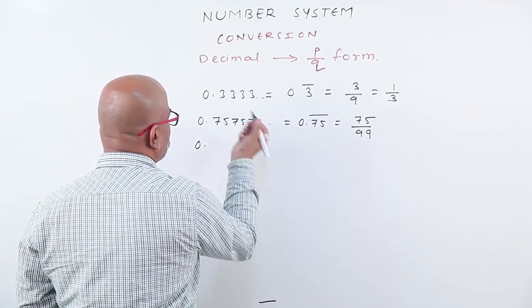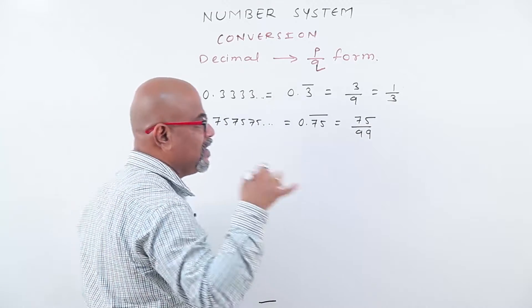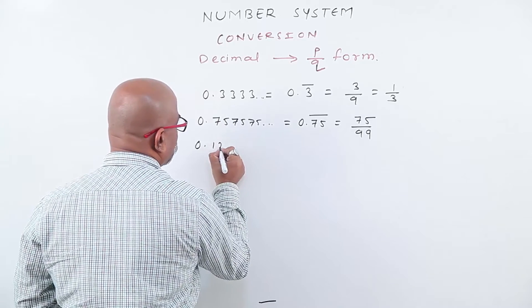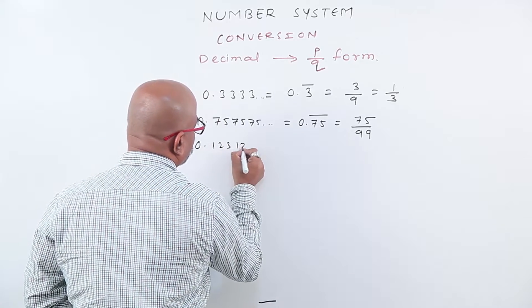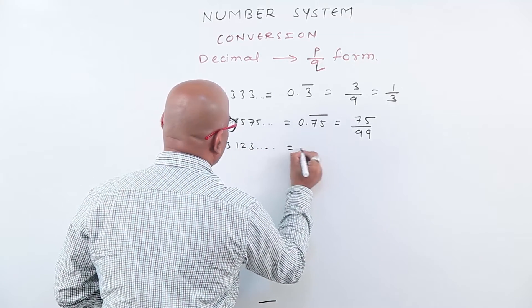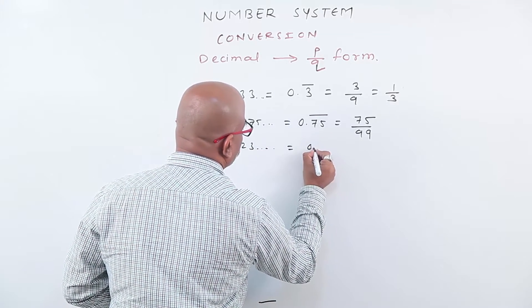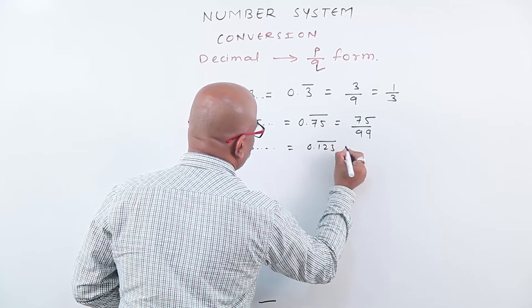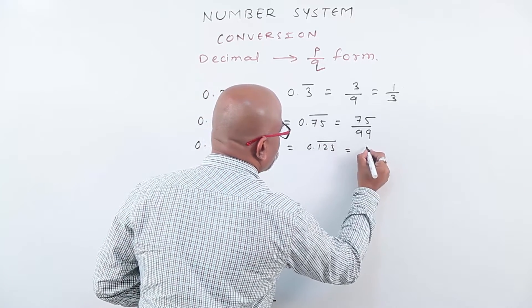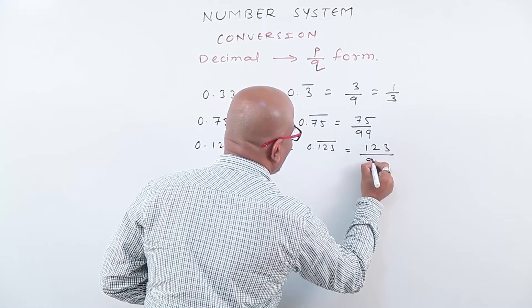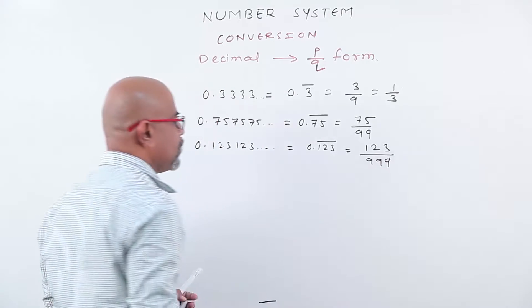Next, suppose three numbers are recurring — like 1, 2, 3, 1, 2, 3 and so on. We write in reduced form 0.123 bar. The answer is 123 upon 999.